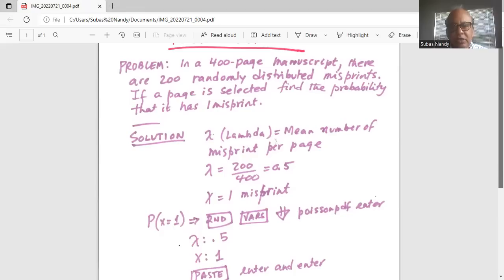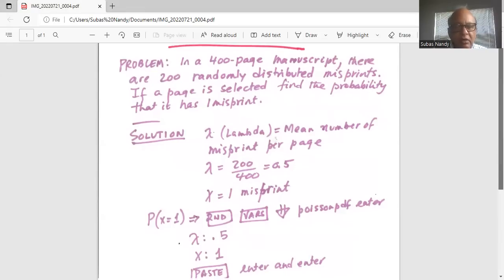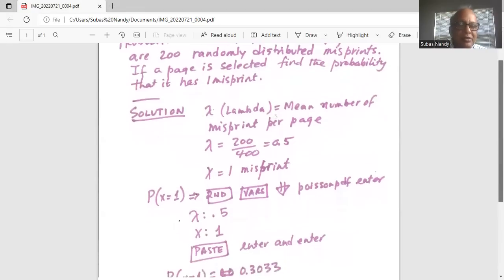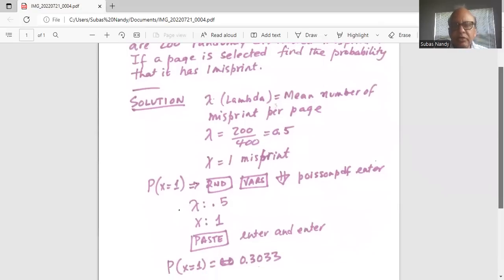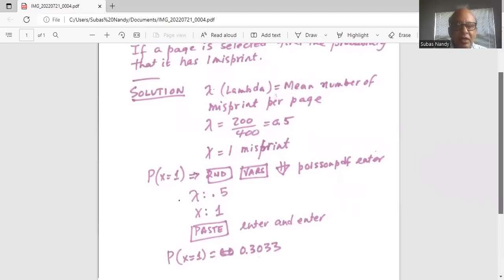When it is lined with Poisson PDF, your cursor, you hit enter. And then in the following screen, enter lambda is 0.5, x is 1. Paste, put your cursor on paste and hit enter and enter.